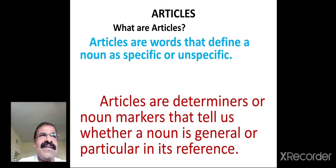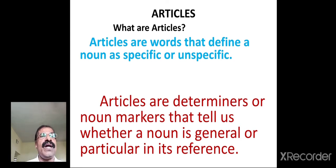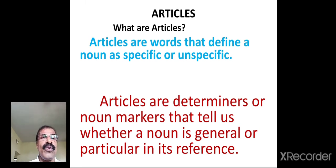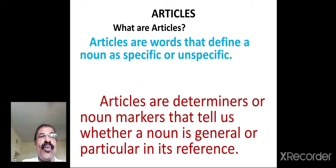What are articles? There are two kinds of articles in the English language: definite and indefinite. Articles are some words which define a noun as specific or unspecific. Articles can indicate whether a noun is used in its particular or general sense. In other words, articles are determinants or noun markers that tell us whether a noun is general or particular in its reference in a sentence.